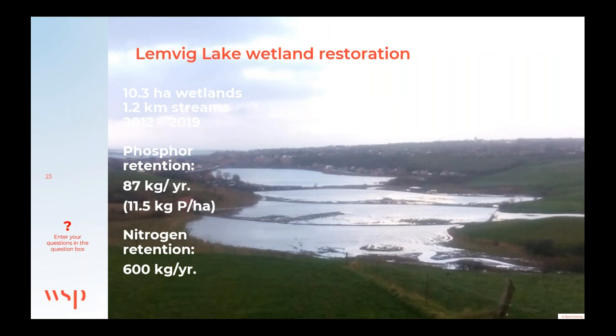The next example is a phosphorus wetland in the western part of Denmark. The goal was to remove phosphorus from the stream before it ended up in Limby Lake. Completed in 2019, the project restored 10.3 hectares of wetlands and 1.2 kilometers of streams. The project included creating small berms across the project area to create flooding during extreme precipitation — the pipes in the berms are large enough to transport normal water flow but too small for larger amounts, which results in flooding.